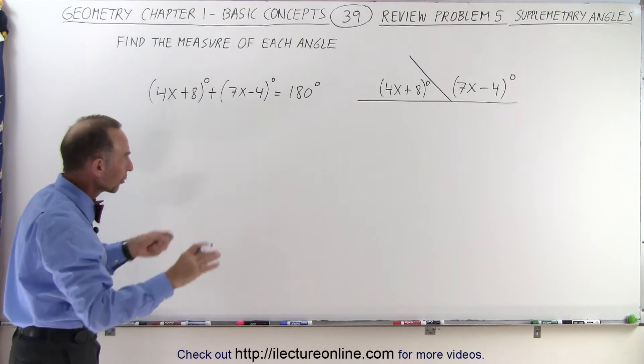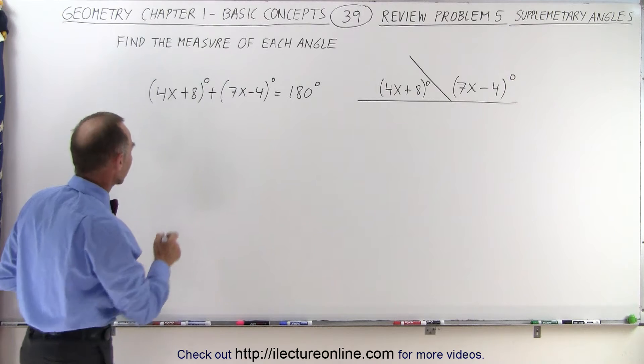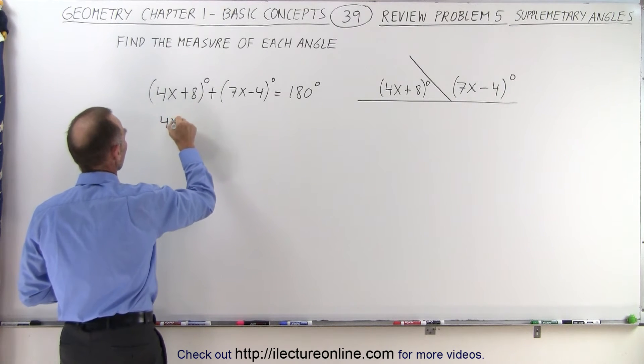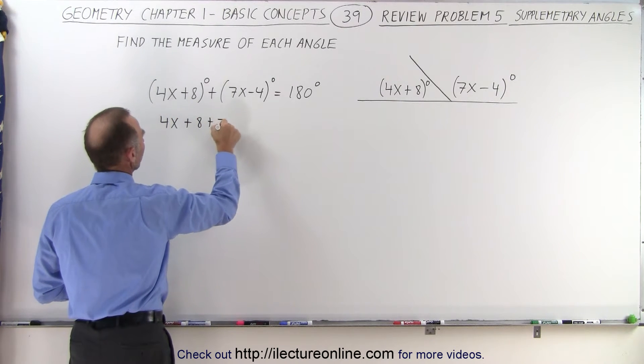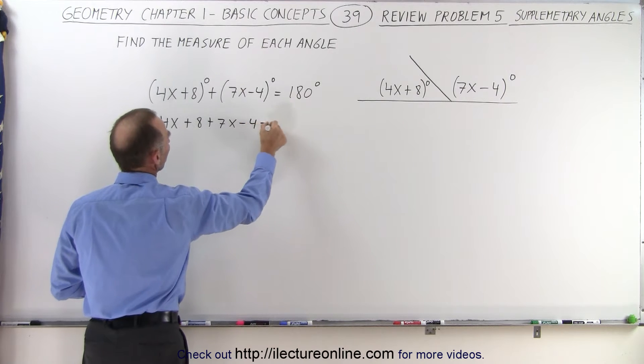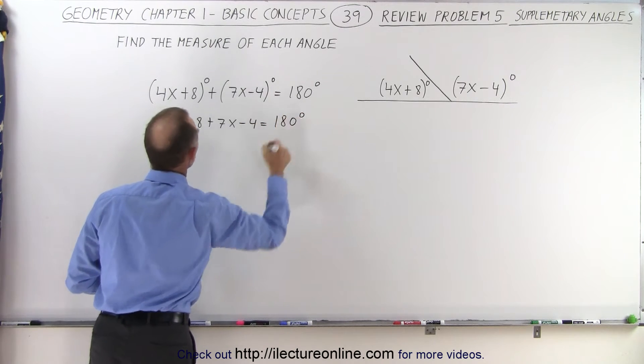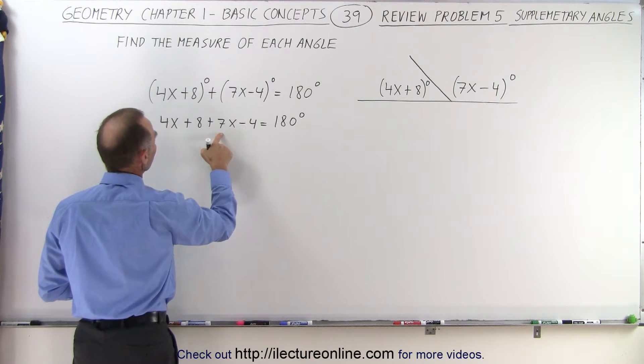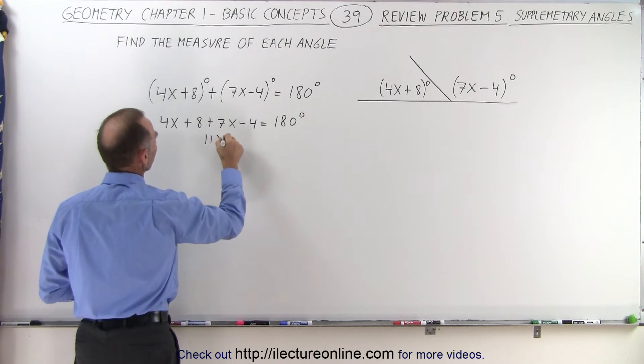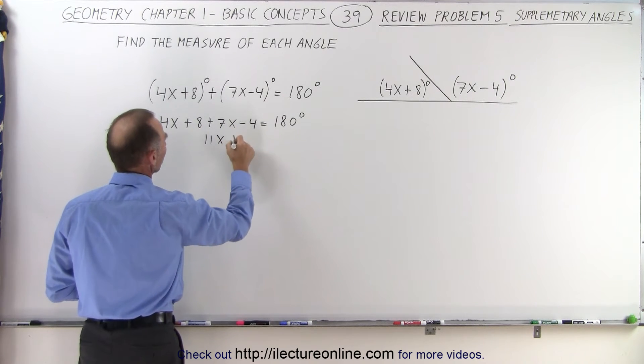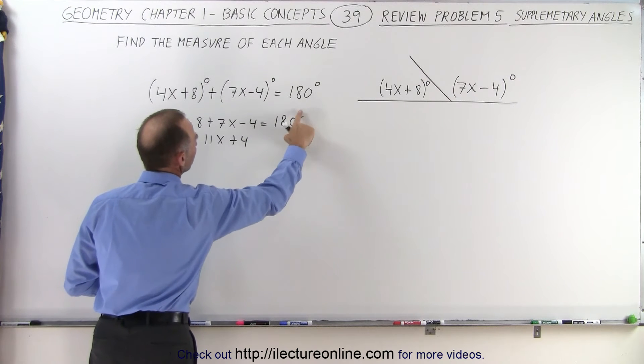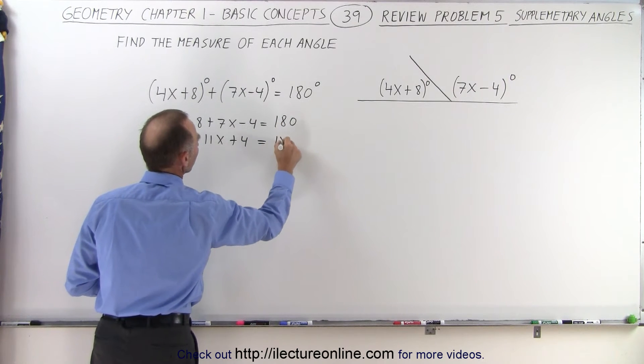So now we can simply drop the degree mark and solve for x. That gives us 4x plus 8 plus 7x minus 4 equals 180 degrees. Combine the x's together. That gives us 11x and 8 minus 4 gives us plus 4. Equals 180.